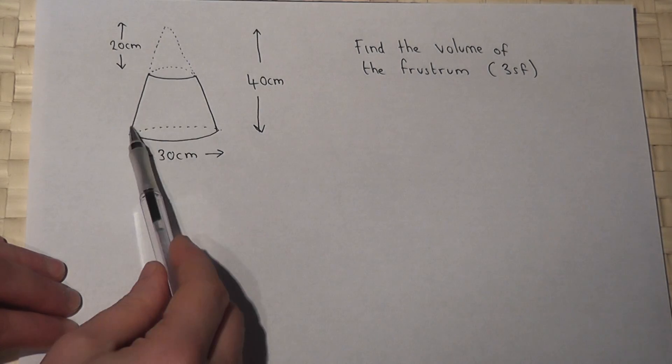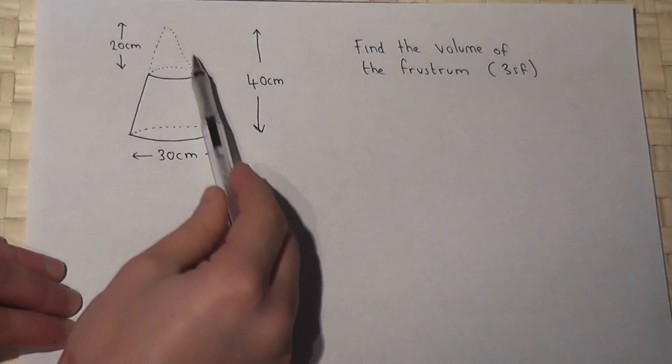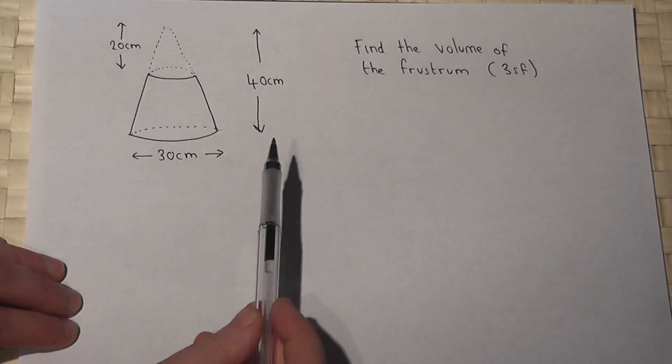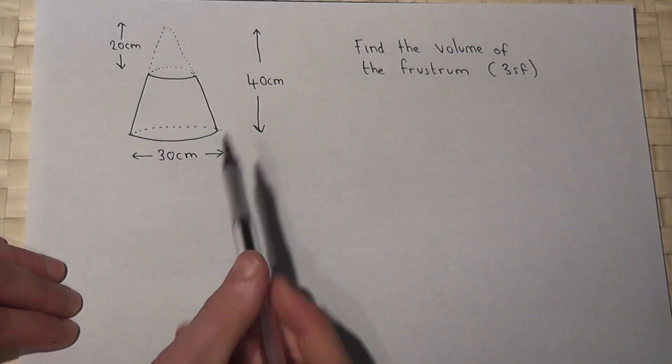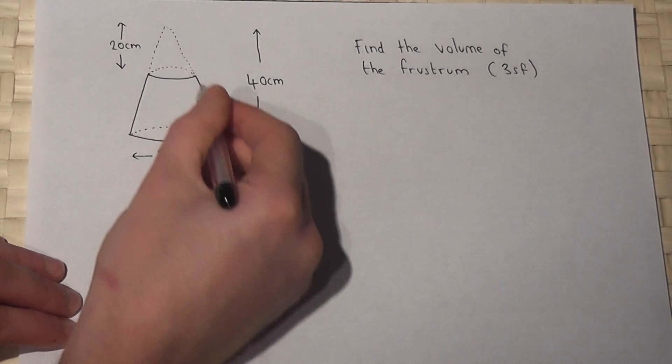In this question a cone has the top section removed and the question is asking for the volume that's left over in that cone, i.e. this volume here.